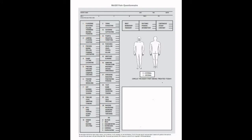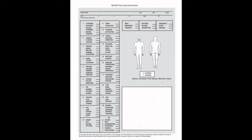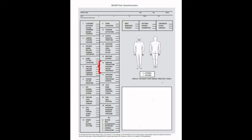Each subcategory contains from 3 to 6 descriptive words. The first domain, or sensory, containing subcategories 1 to 10, includes 42 descriptors. The second domain, or affective, containing subcategories 11 to 15, includes 14 descriptors. The third domain, evaluative, containing subcategory 16, includes 5 descriptors, and subcategories 17 to 20 are miscellaneous items that contain 17 descriptors.